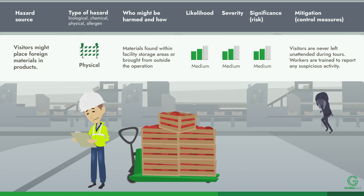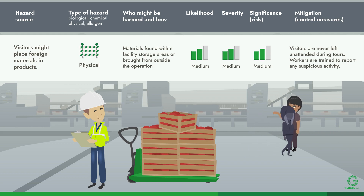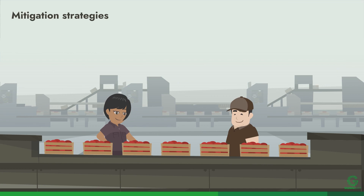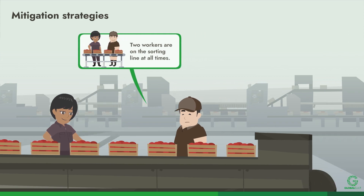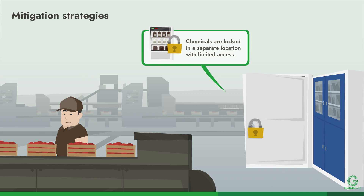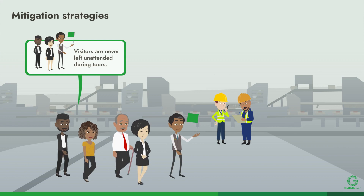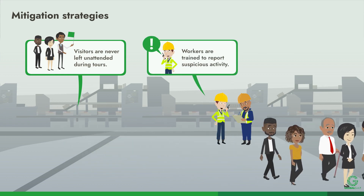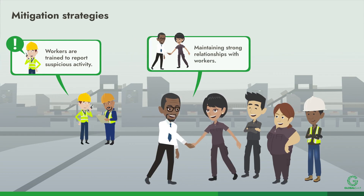Effective mitigation strategies often rely on observing and monitoring people to ensure such harmful acts are not committed. Examples of mitigation strategies might be: two workers are present on the sorting line at all times; chemicals are locked in a separate location with limited access; visitors are never left unattended during tours; and workers are trained to report any suspicious activity.